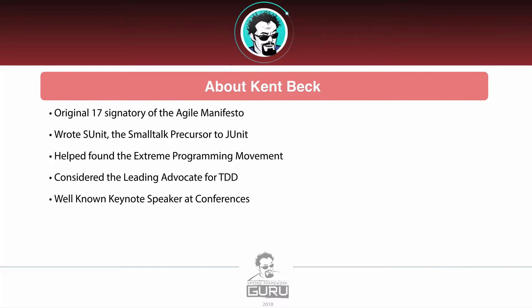Kent also helped found the Extreme Programming movement. A number of good practices came out of that, and it's very intertwined with the Agile movement. I'm focusing on the testing aspects here, and I'm talking about Kent because he's really considered a leading advocate for test-driven development.